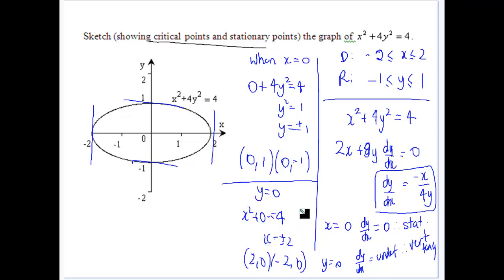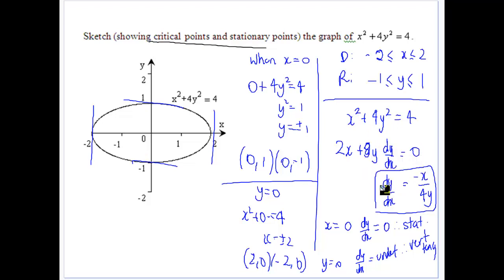Let's do our differentiation and look at the gradient. Differentiating implicitly: x squared becomes 2x, 4y squared becomes 8y dy/dx, and 4 becomes 0. Rearranging gives dy/dx equals minus x on 4y — we take the 2x across and divide by 8y to get that. Stationary points occur when x is equal to 0.